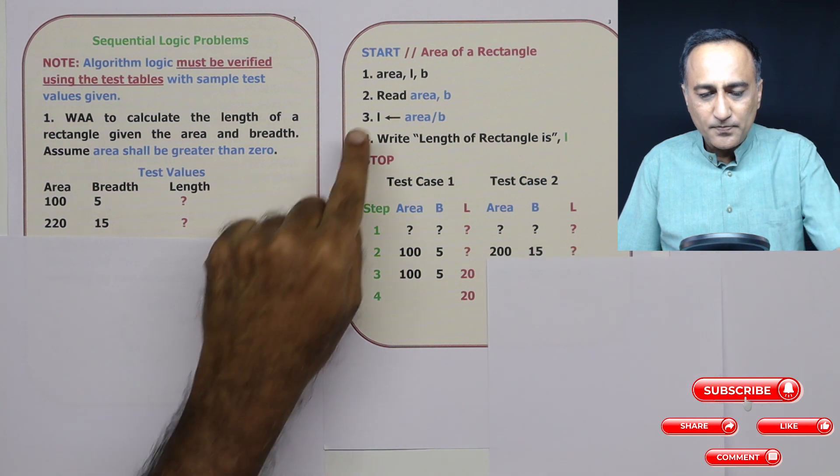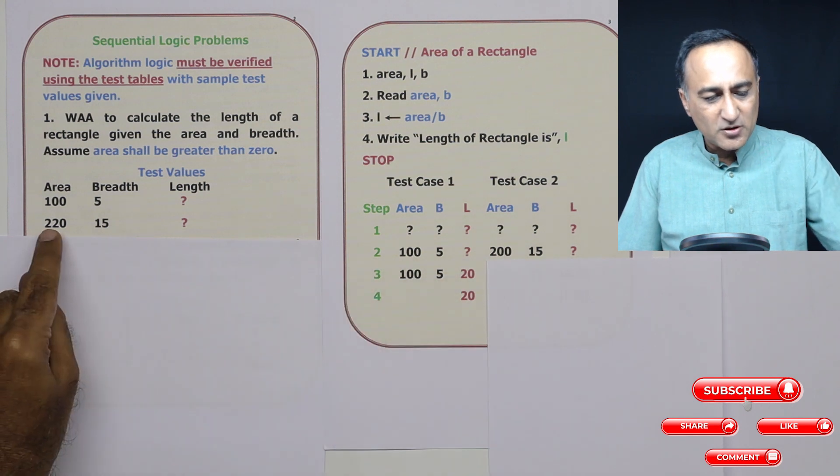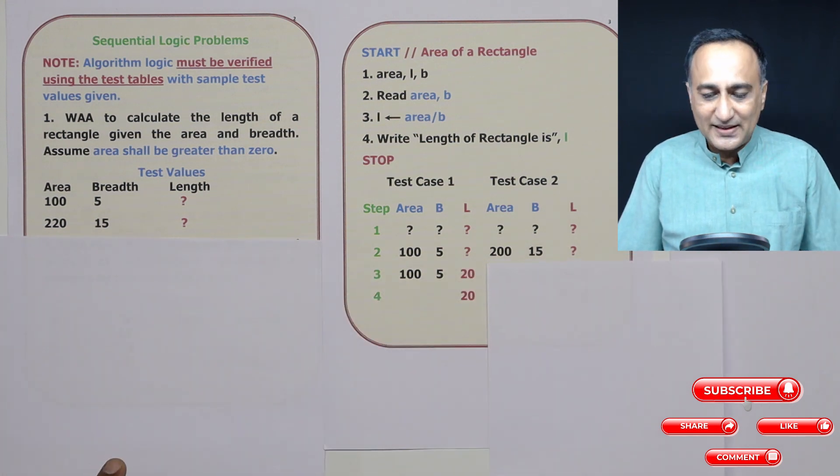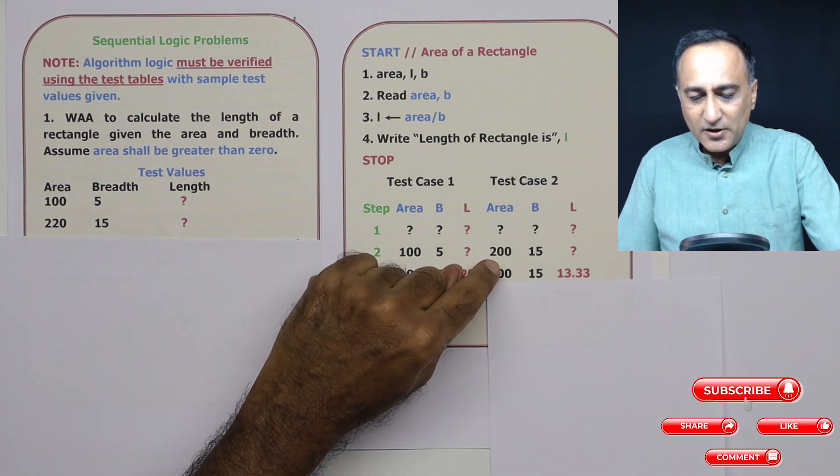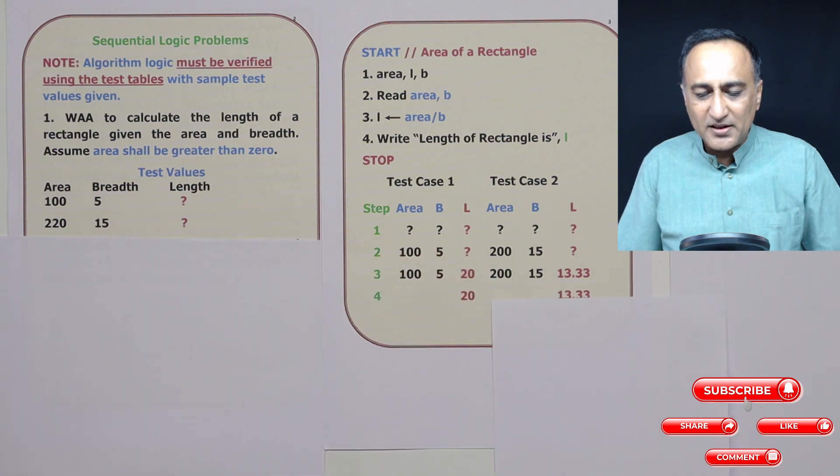Step two, I read area and breadth, reading 215 based on the test tables. I still do not know the length. Then 215, and length is 200 divided by 15, which is 13.33.